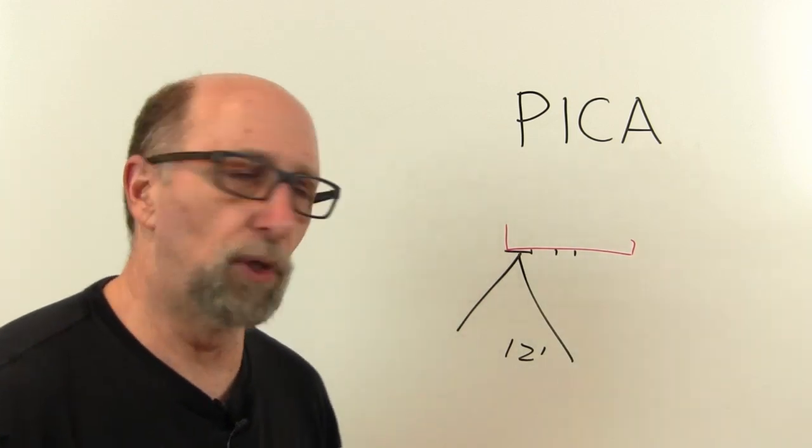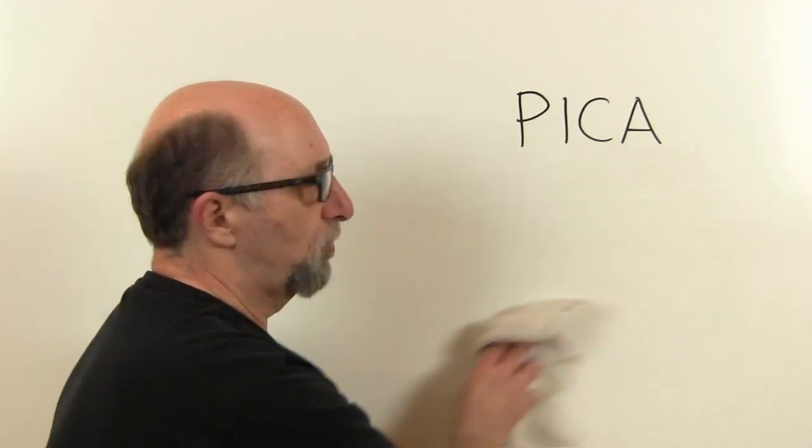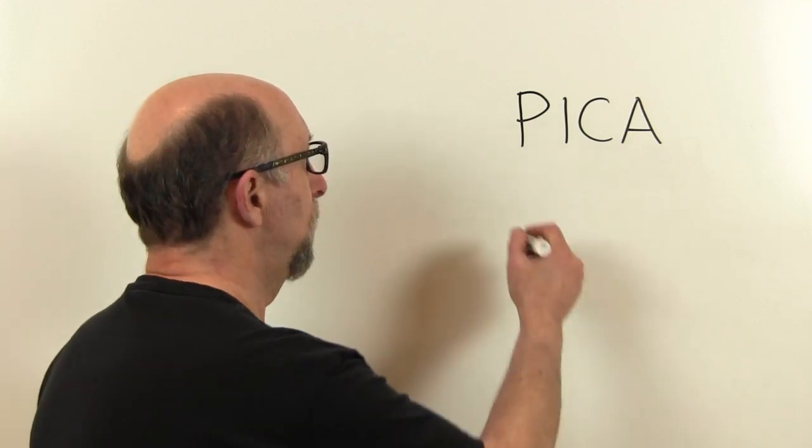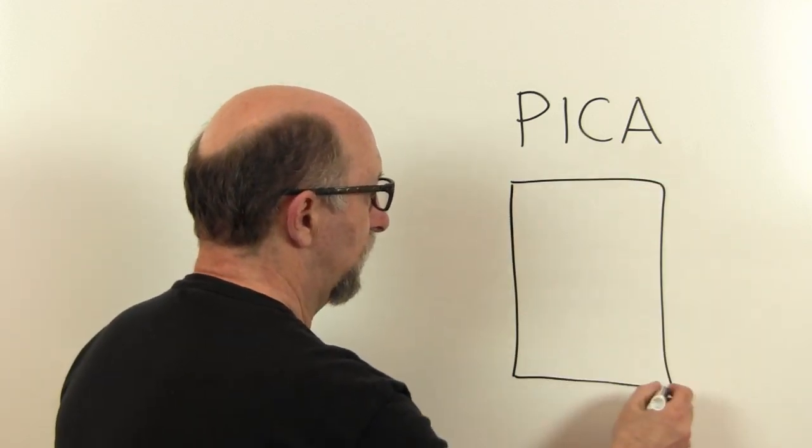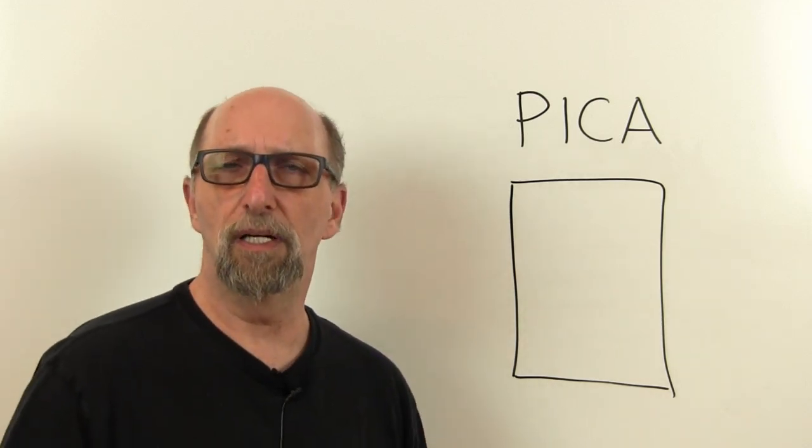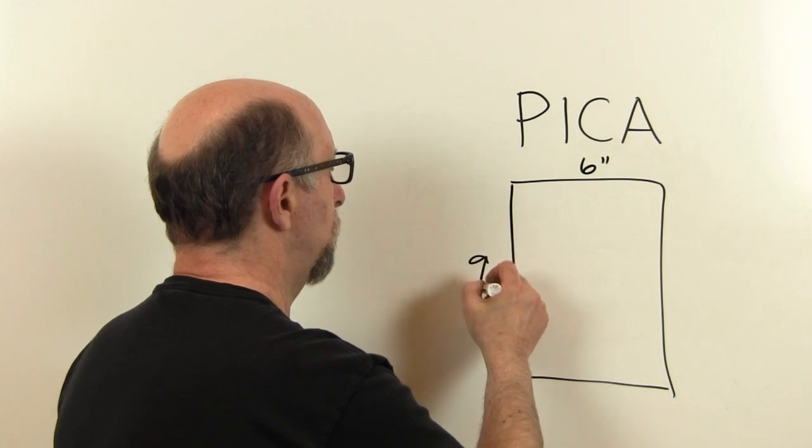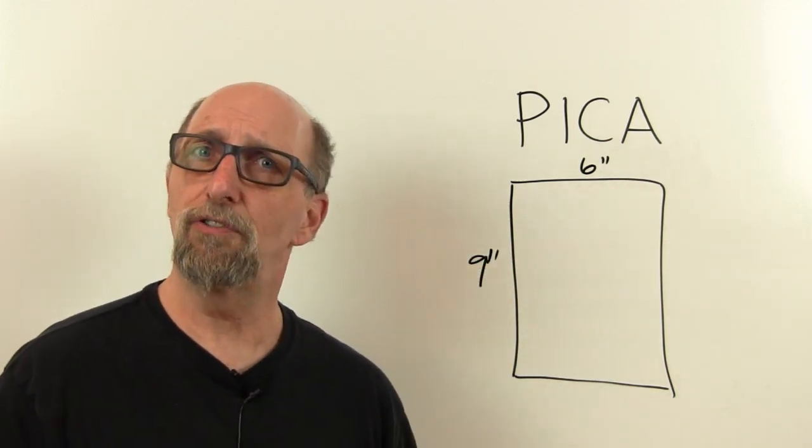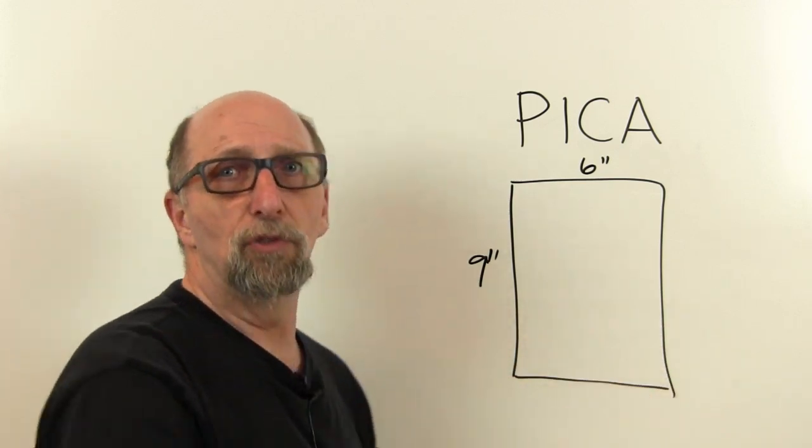The other thing that we use Picas for is describing the page itself that we set the type on. For instance, suppose we have a book page. I'm going to draw a tall rectangle. Let's say this is a standard book, a six by nine book. So that's six inches by nine inches. You'll notice that we still describe the page size using inches. It's only everything inside the page that we use points and Picas.